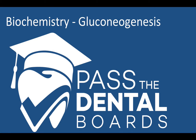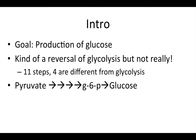In this video we're going to be talking all about gluconeogenesis. The goal of gluconeogenesis is to produce glucose, and it can be thought of as a reversal of glycolysis, but it's not exactly because not all the steps are the same. There are 11 steps and four are different from glycolysis. The starting point is pyruvate, and then we go through a couple of steps and end up with glucose-6-phosphate, which in glycolysis is the first step.